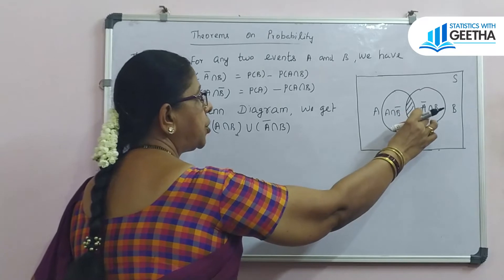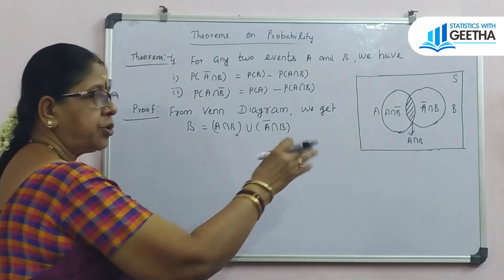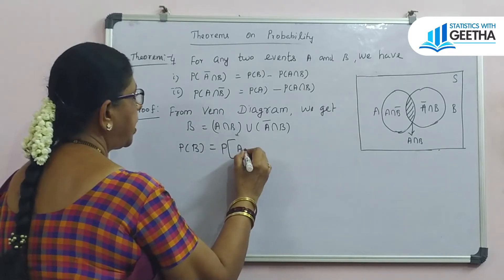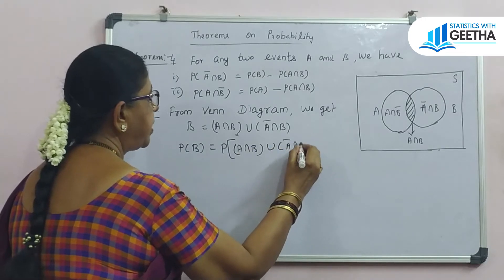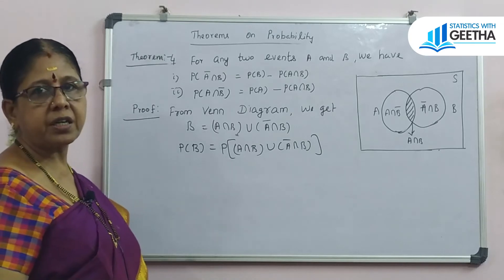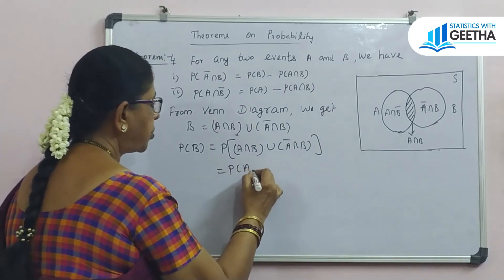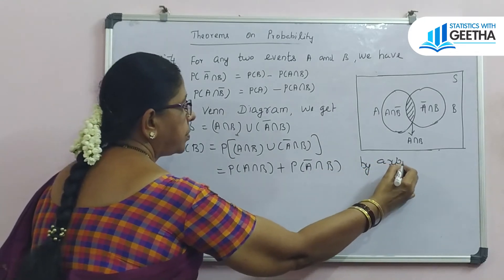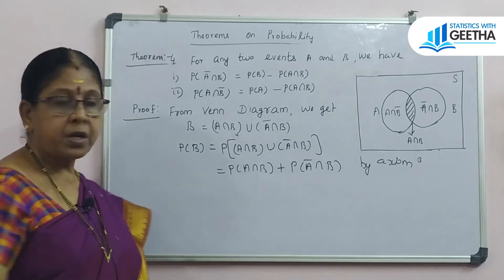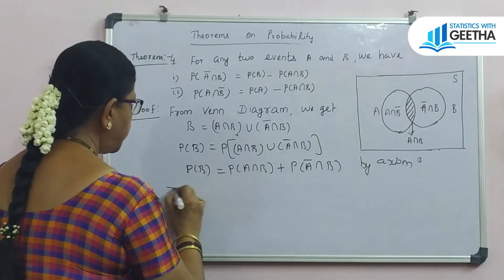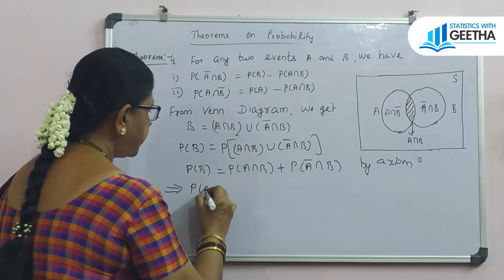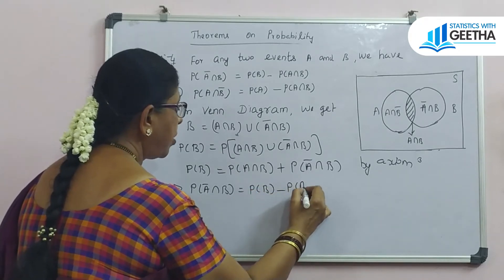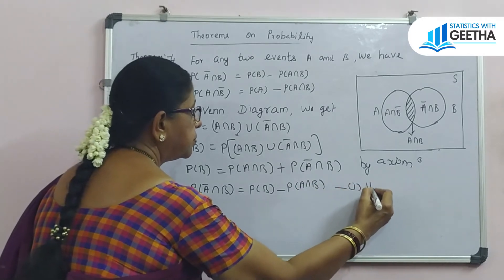From the Venn diagram, B equals (A ∩ B) union (A' ∩ B) — two mutually exclusive events. Taking probability on both sides and applying axiom 3, we get P(A ∩ B) plus P(A' ∩ B). This is equal to P(B), which implies P(A' ∩ B) equals P(B) minus P(A ∩ B). Result 1 is proved.